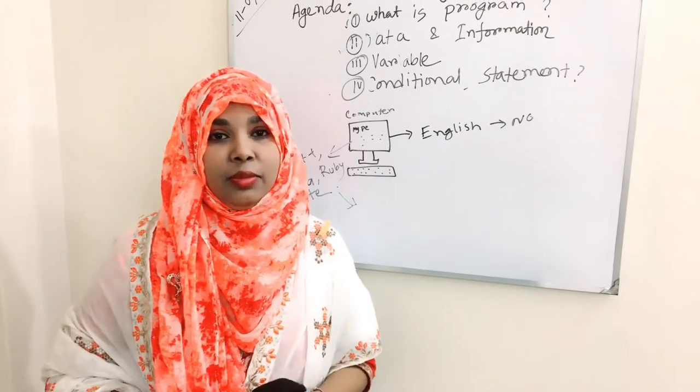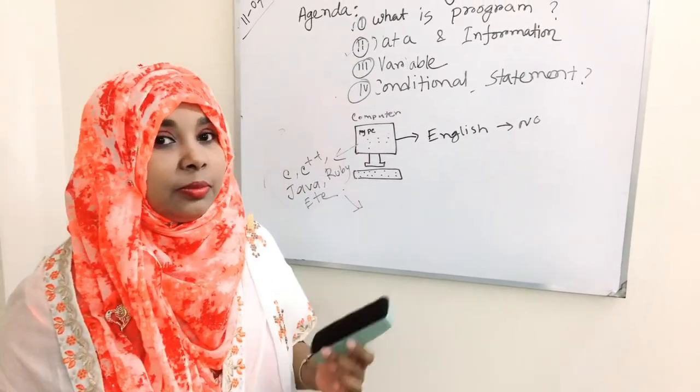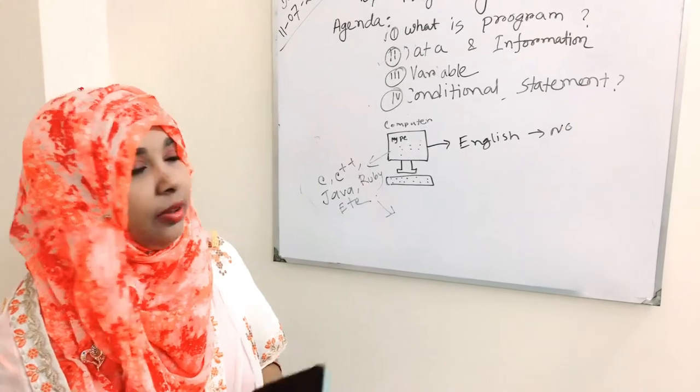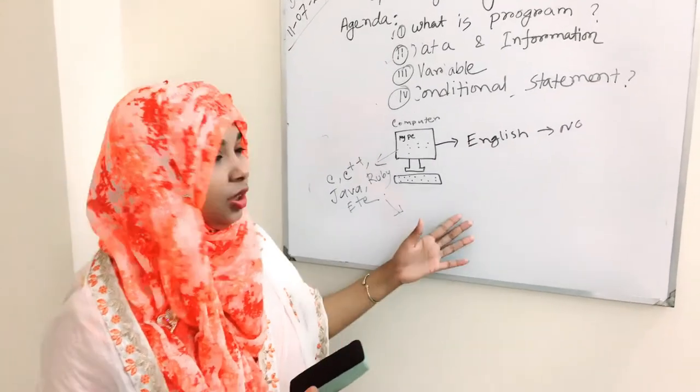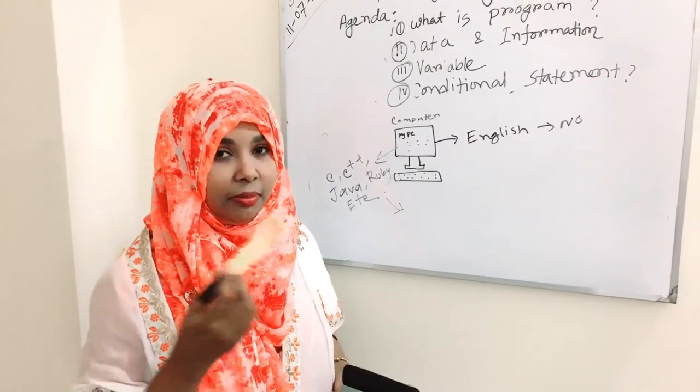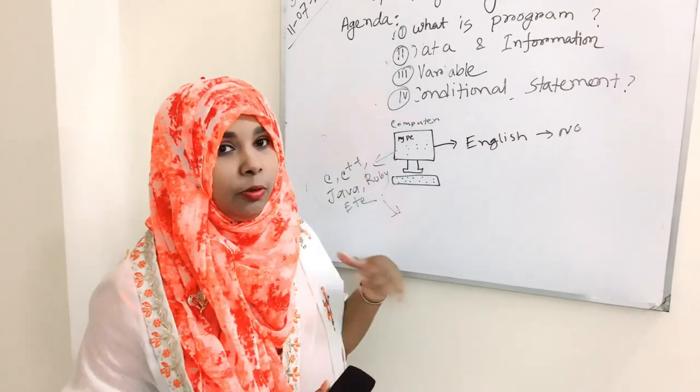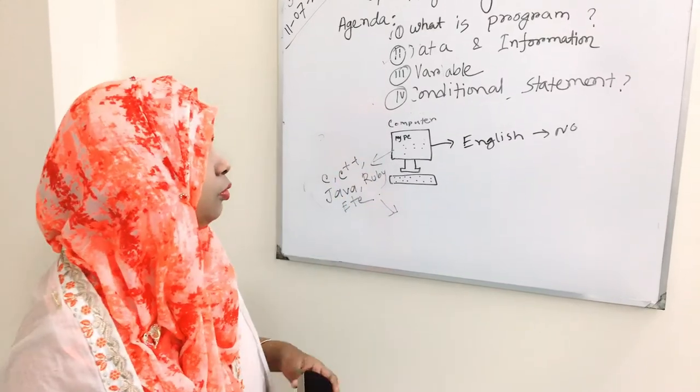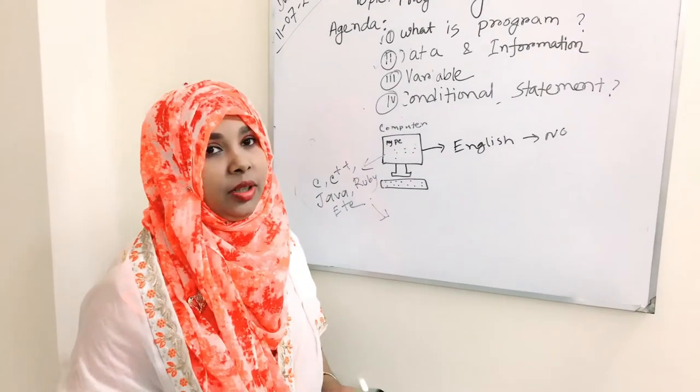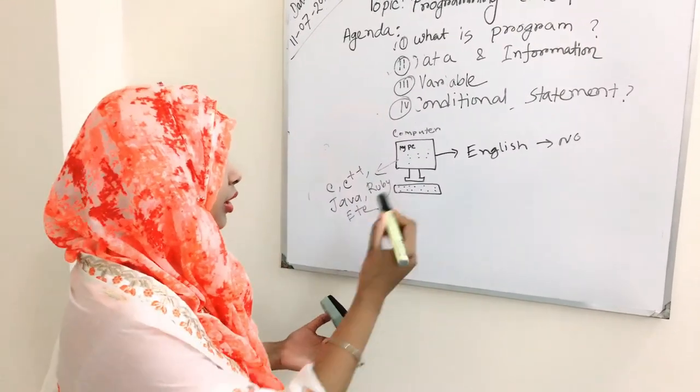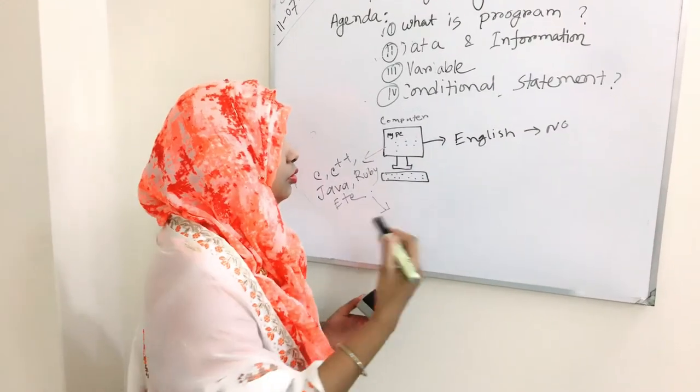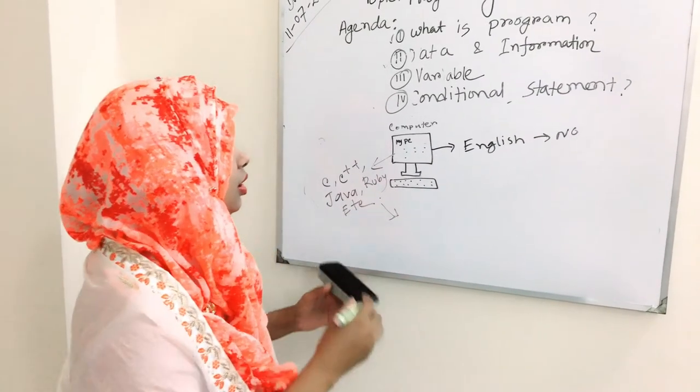You can ask me, what is data? Everything is data. Here, the board, it is data. The marker, it is data. But when it is organized and when it is meaningful, then it is called information. Like that, I am writing something on the board using this marker. That means it is information.